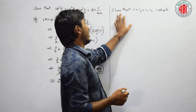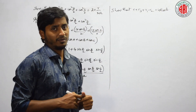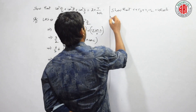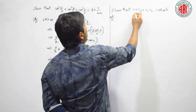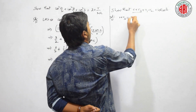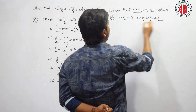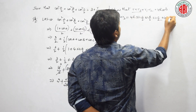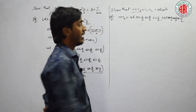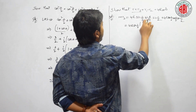The next question asks us to show that r + r₃ + r₁ - r₂ = 4R·cos(B). This is one of the most important problem types. Let us split the four terms into two pairs: (r + r₃) and (r₁ - r₂). The formula for r is 4R·sin(A/2)·sin(B/2)·sin(C/2), and r₃ is 4R·cos(A/2)·cos(B/2)·sin(C/2).